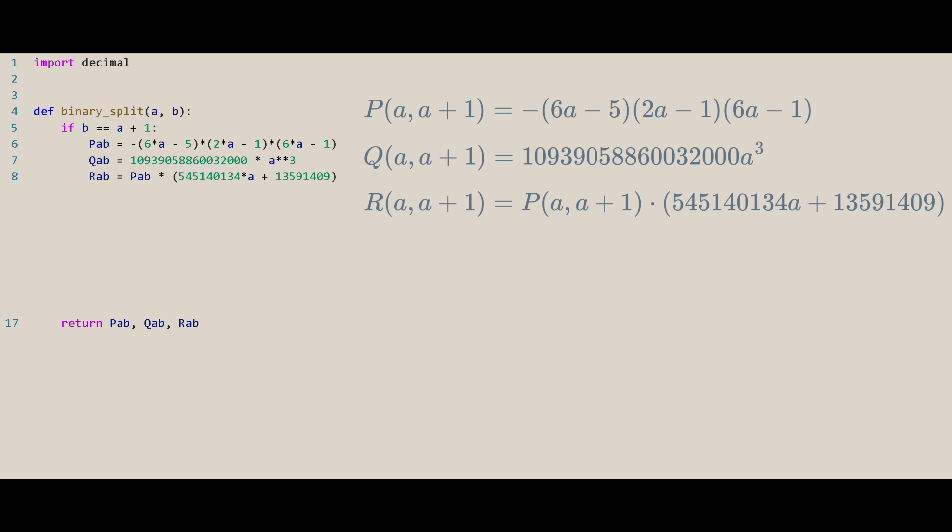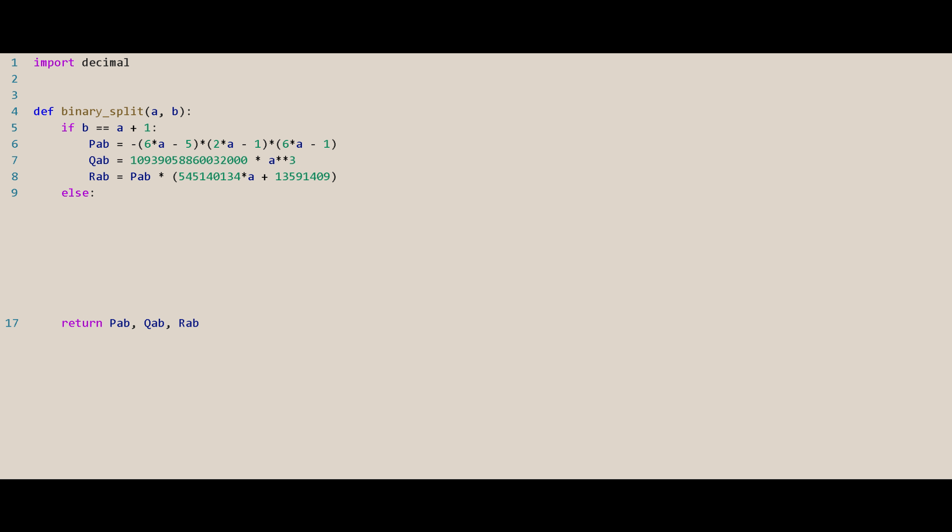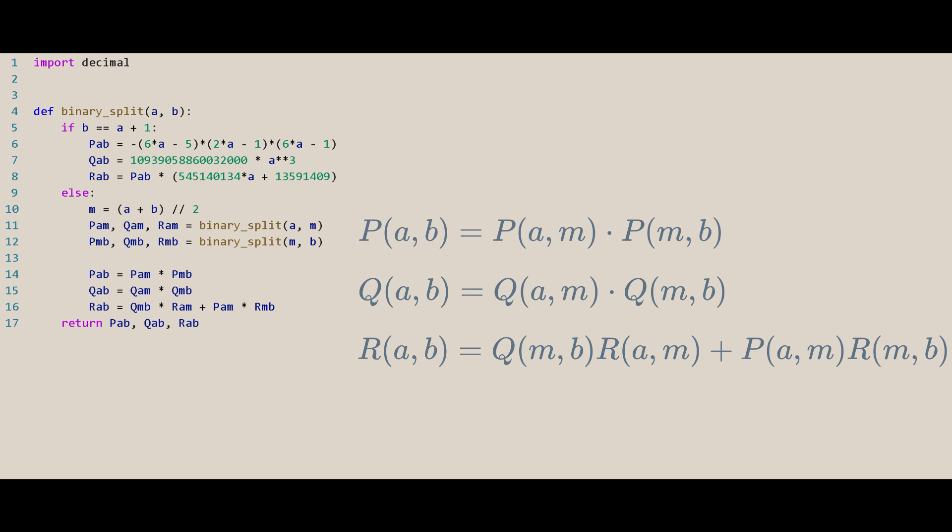The base case for this recursion is if b equals a plus 1, then we can directly compute them with these. If it's not the base case, then we'll compute the midpoint m between a and b and compute P, Q and R of a,m and m,b. Now, let's compute P, Q and R of a,b from them with these. And that's all for the binary split function.